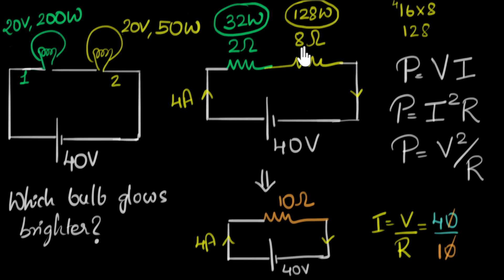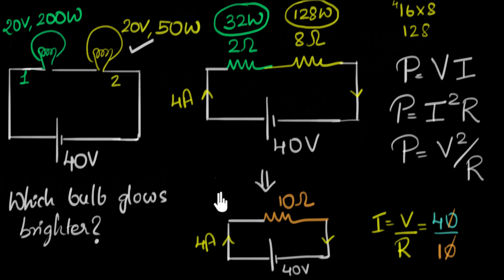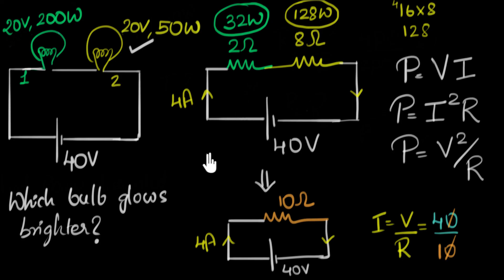Since there's a much higher power dissipated in the second bulb, the second bulb glows much brighter. That's how we solve problems whenever we have bulbs: first figure out the resistance, then treat it as a resistance problem. What's interesting is that when these bulbs are in series, the one which had a lower power rating is the one which glows brighter. Can you think about why this is happening — why the one with the lower power rating glows brighter than the one with the higher power rating?